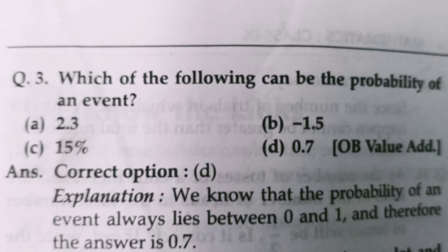Moving to question number 3. Which of the following can be the possibility of an event? We know that the probability of any event lies between 0 and 1. So 2.3 cannot be a probability, minus 1.5 also cannot be, and 15% means 15/100 which is also not valid in this context. The correct answer is D which is 0.7, because probability of any event always lies between 0 and 1.